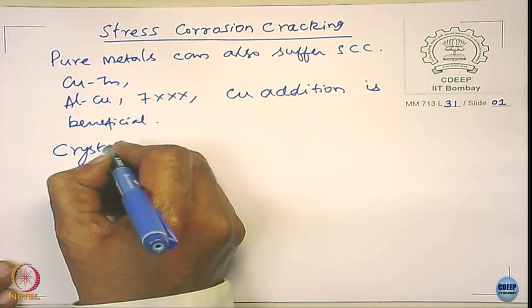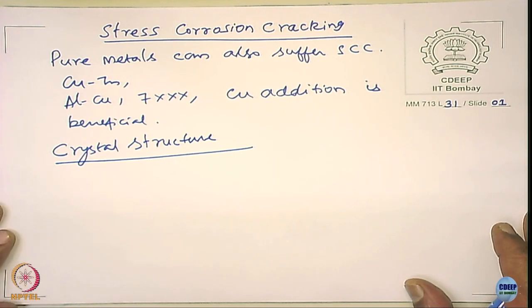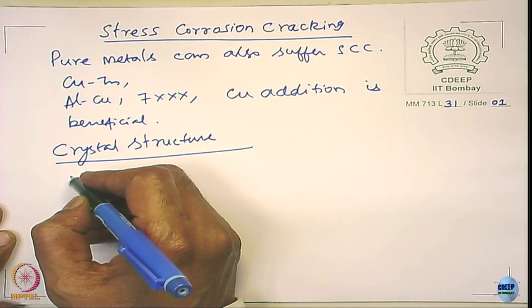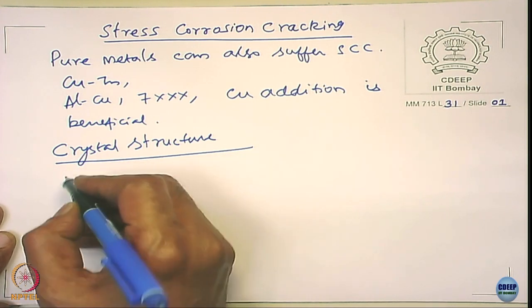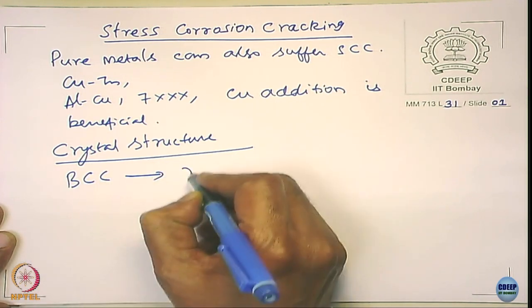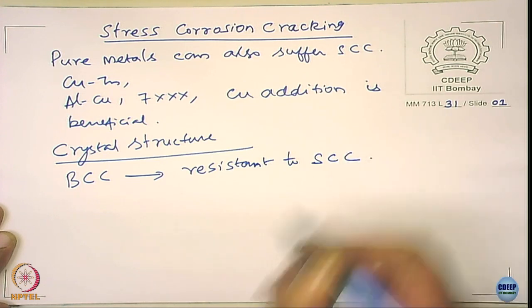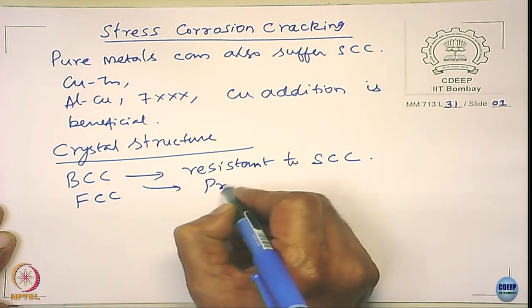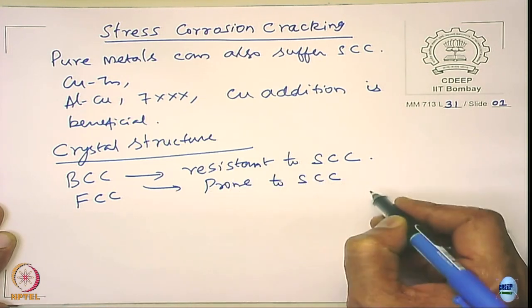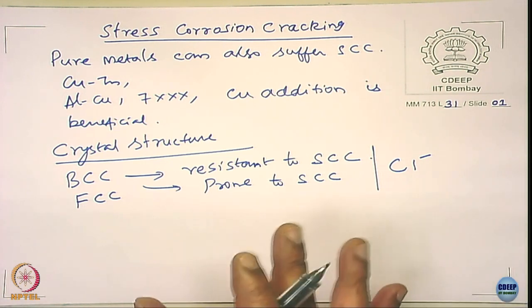The other important factor in metallurgy is crystal structure. We make an illustration related to the ferrous system. Taking stainless steel — we have seen the classification of stainless steels when we talked about sensitization — the BCC structure is resistant to SCC. When I say SCC, you always have to associate it with the environment, such as chlorides.